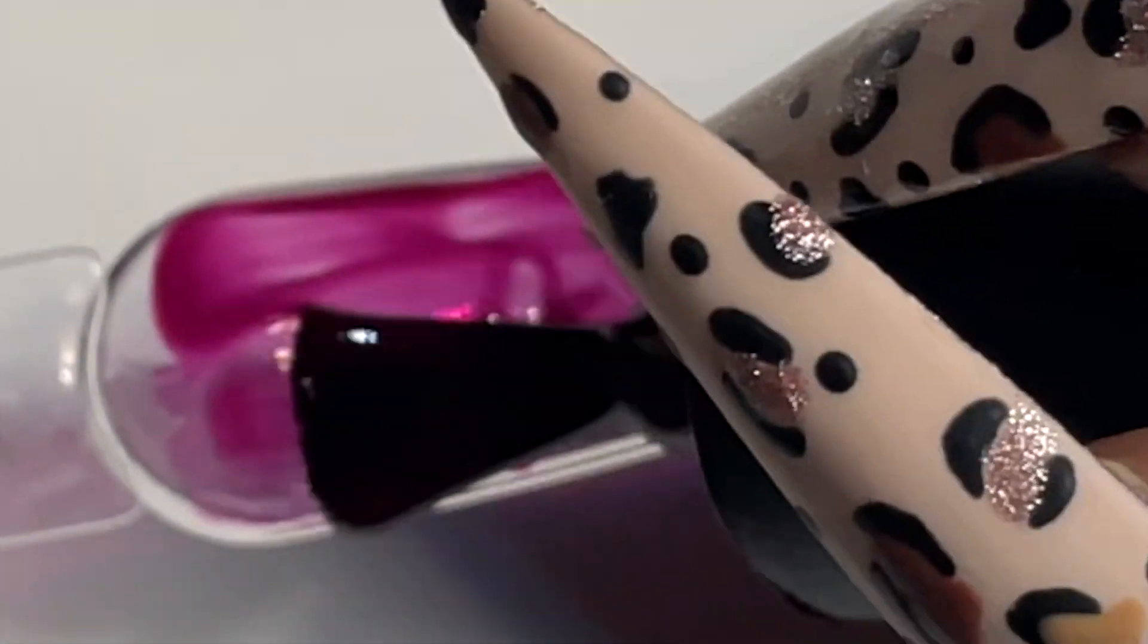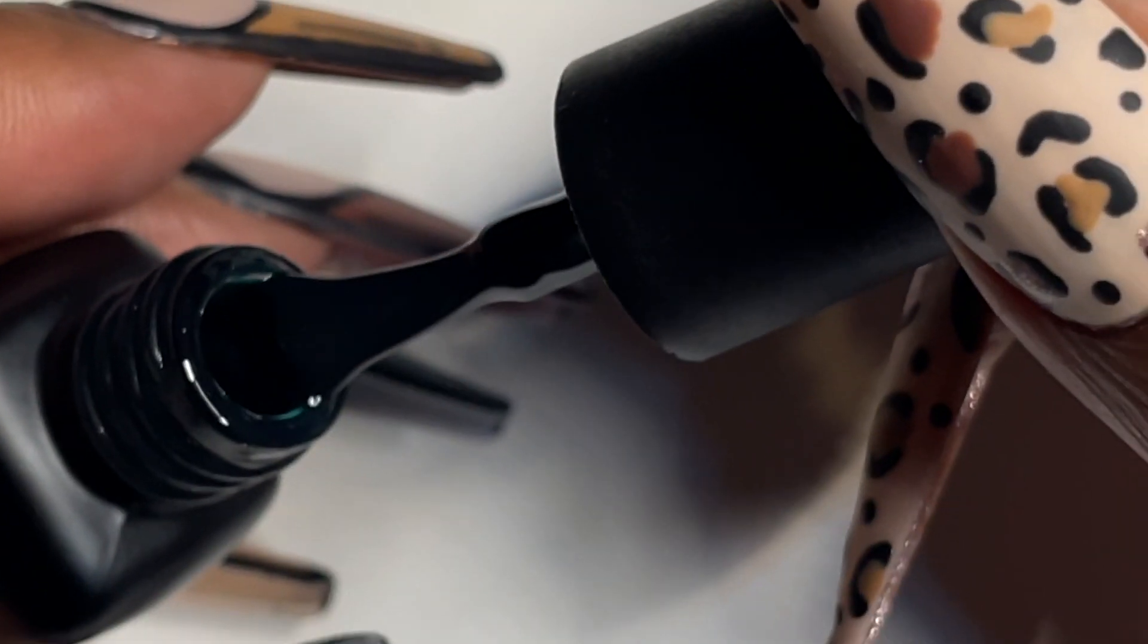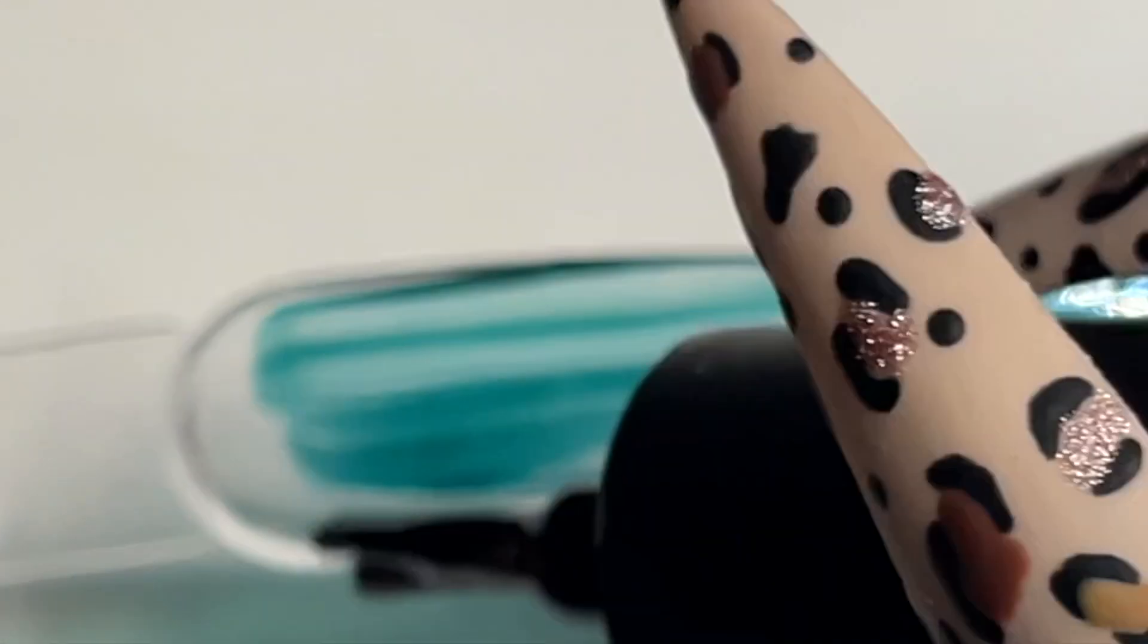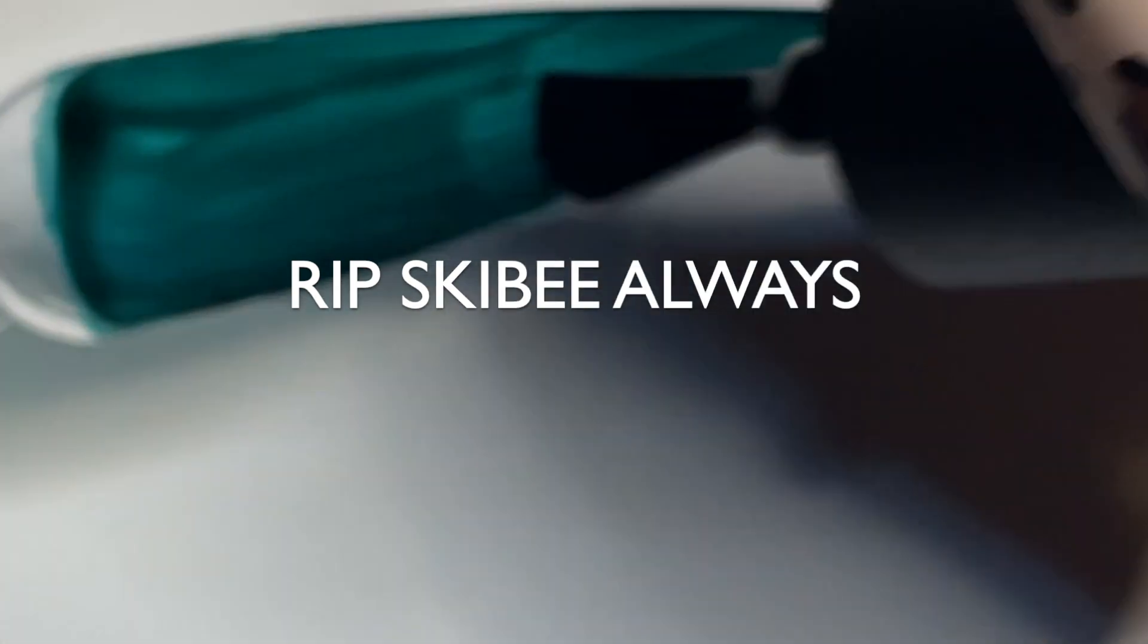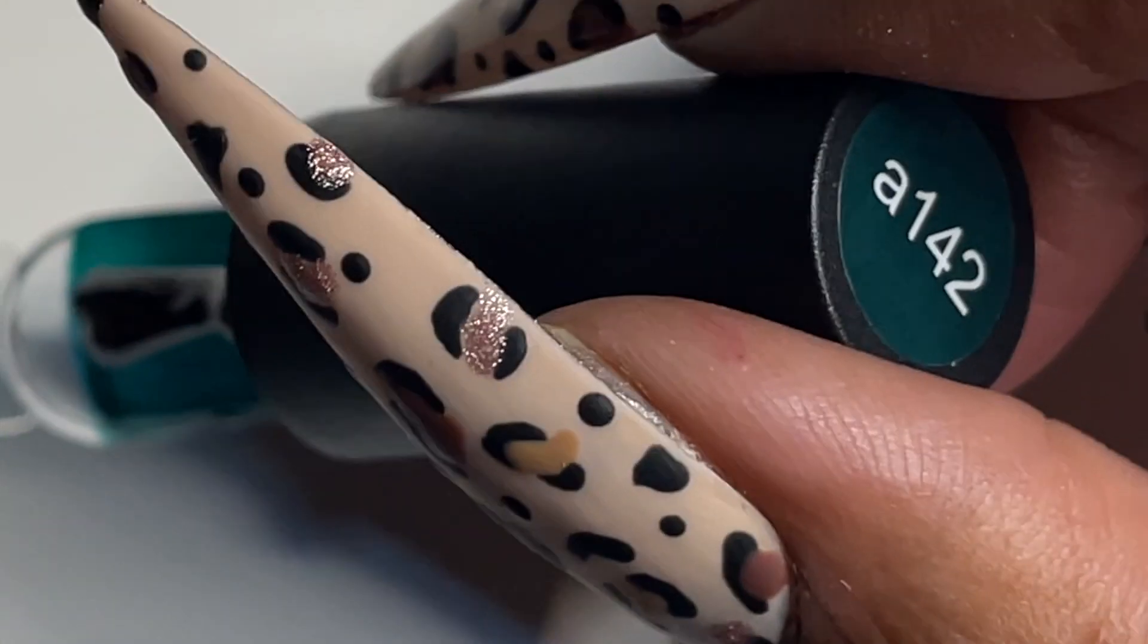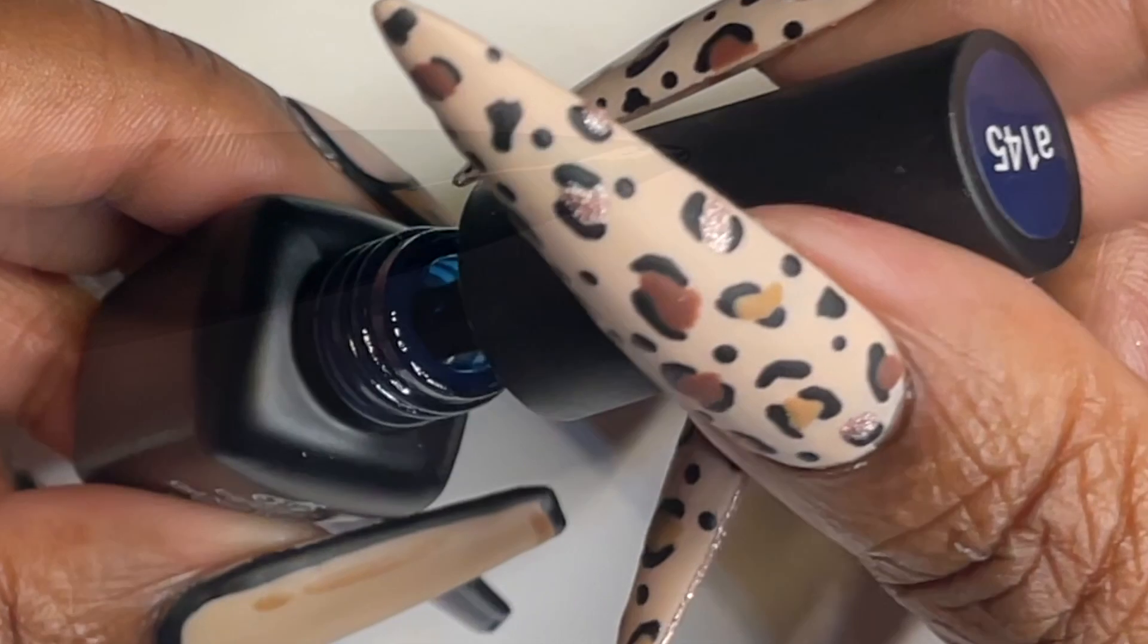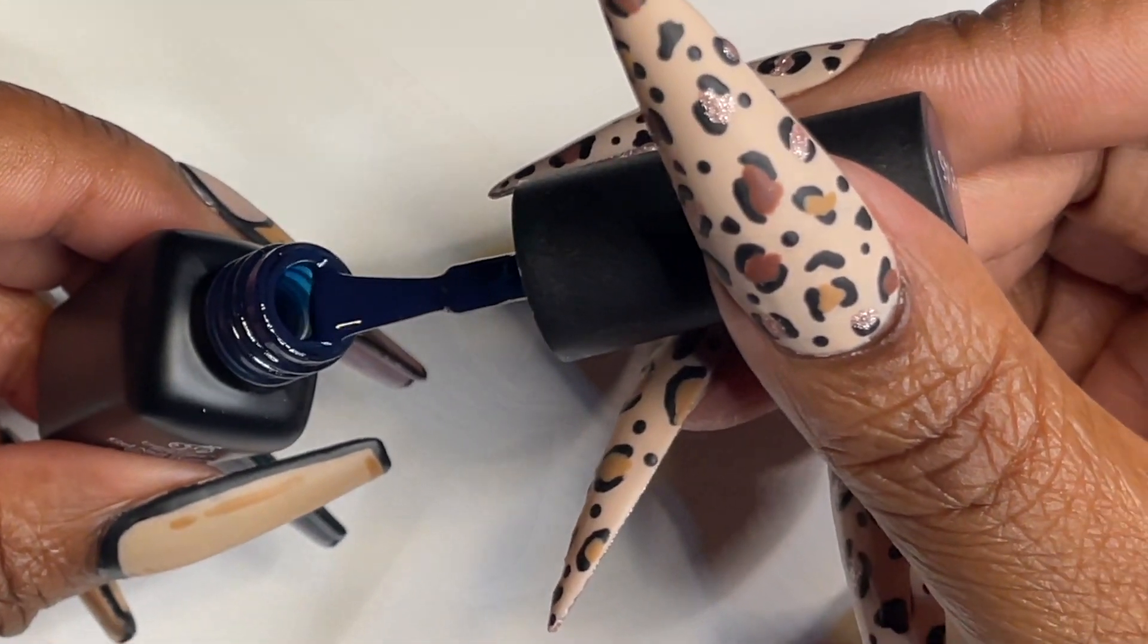My first time getting my nails done professionally was prom. I got a set of nails that had wording on them, they were short, they were blue, and I will insert a picture because I did find one. It was actually dedicated to one of my classmates who had got killed earlier on that year. Me and him were supposed to go to prom. Rest in peace Skibi, always.